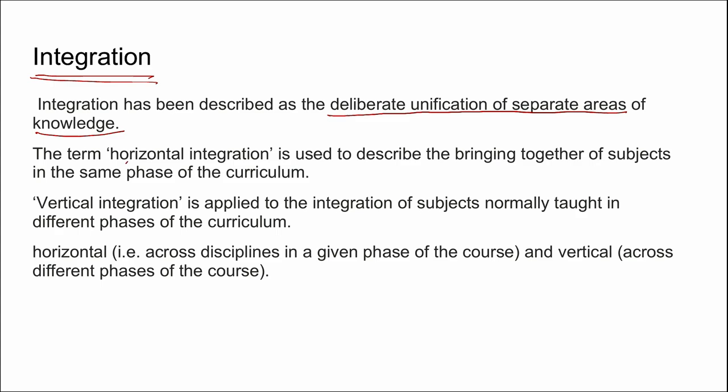The term horizontal integration is used to describe the bringing together of subjects in the same phase of the curriculum. Whereas vertical integration is applied to the integration of subjects normally taught in different phases of curriculum. So when you bring together the subjects within the same phase of the curriculum, that is called as horizontal integration. And when you bring together the subjects that are taught in the different phases of the curriculum, then that is called as vertical integration.